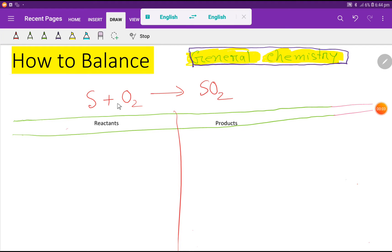Welcome to the channel. Today we are going to balance this reaction. This is sulfur, this is oxygen, and this is sulfur dioxide. To balance this reaction we have to draw it like this. This is the reactant side and this is the product side.